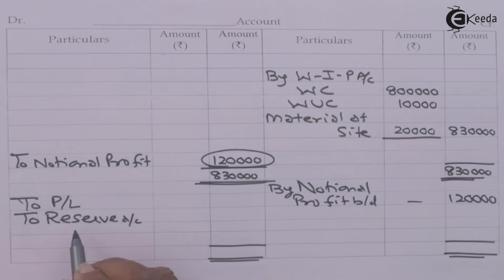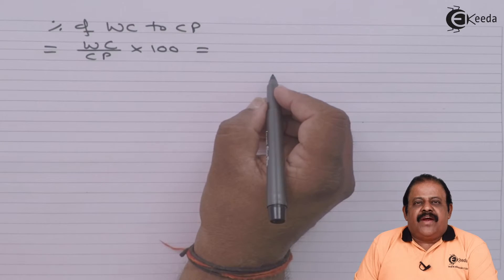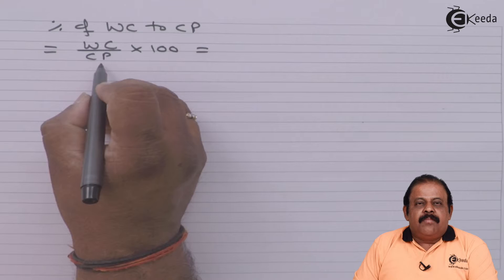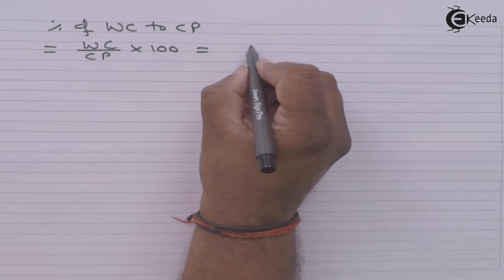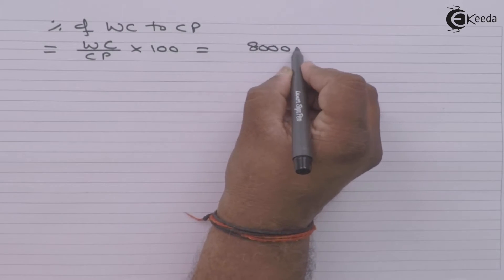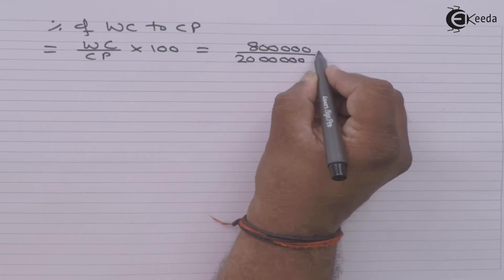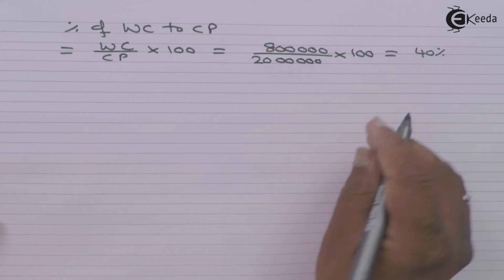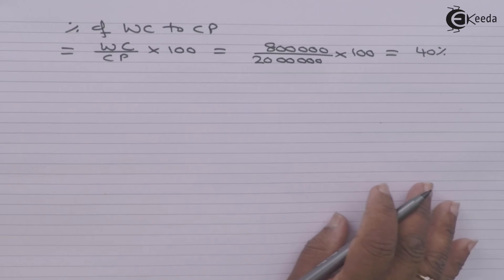Working note: percentage of work certified to contract price = work certified divided by contract price multiplied by 100. Work certified is 8 lakhs and contract price is 20 lakhs, so it comes to 40 percent. Work certified is 40 percent of contract price.